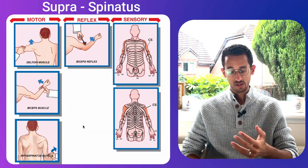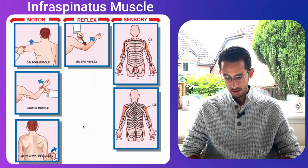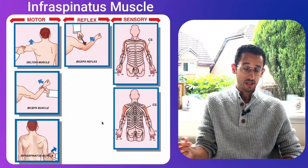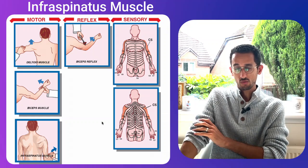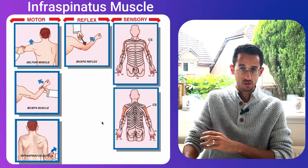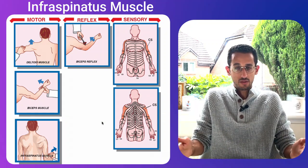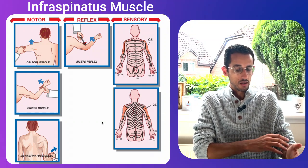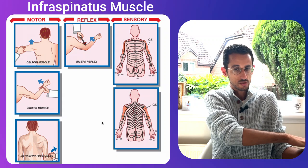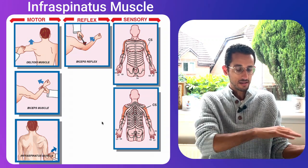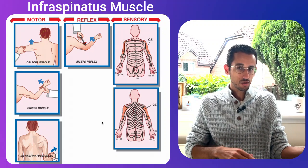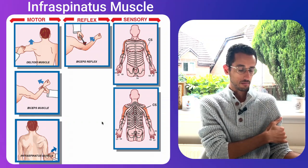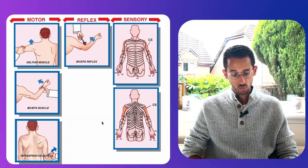The third muscle is the infraspinatus, one of the rotator cuff muscles — which include the supraspinatus, infraspinatus, teres minor and teres major. The infraspinatus is responsible for external rotation of the arm. To test it, ask the patient to keep their arm at about 90 degrees and rotate the arm outward while you provide resistance against that external rotation movement.